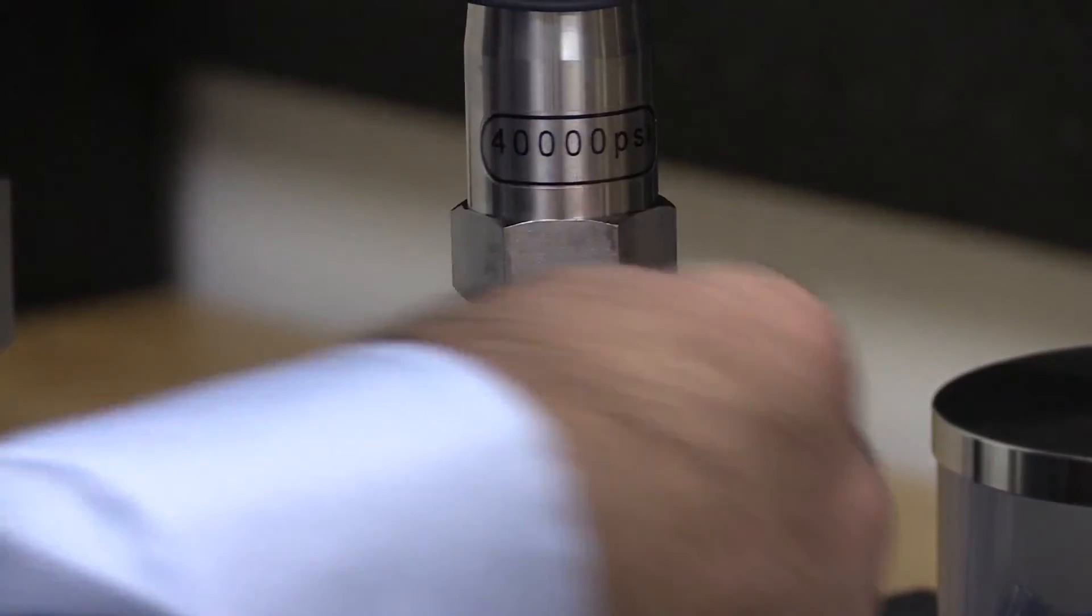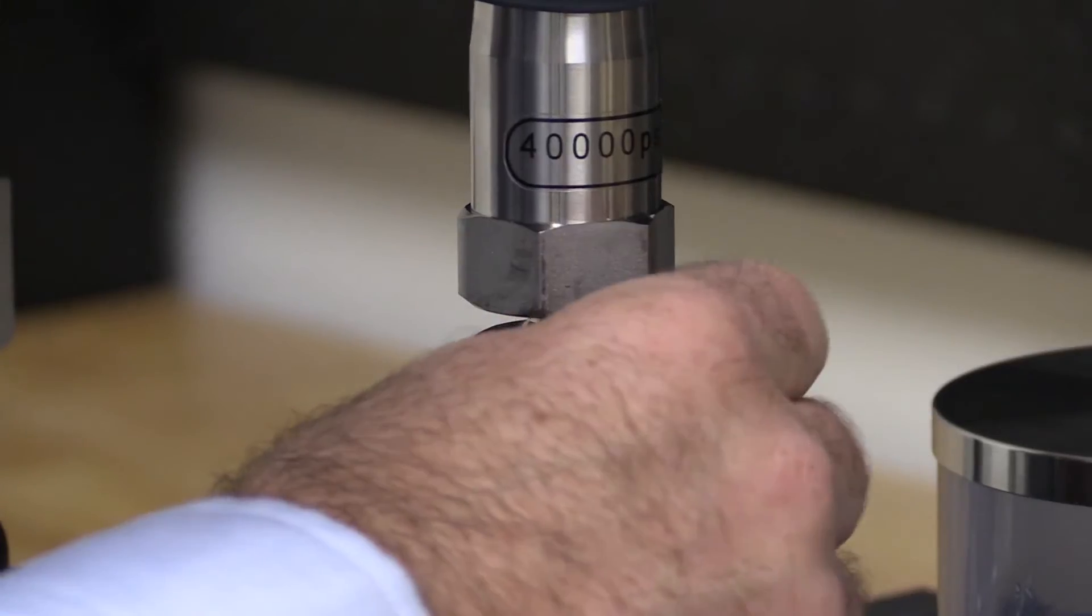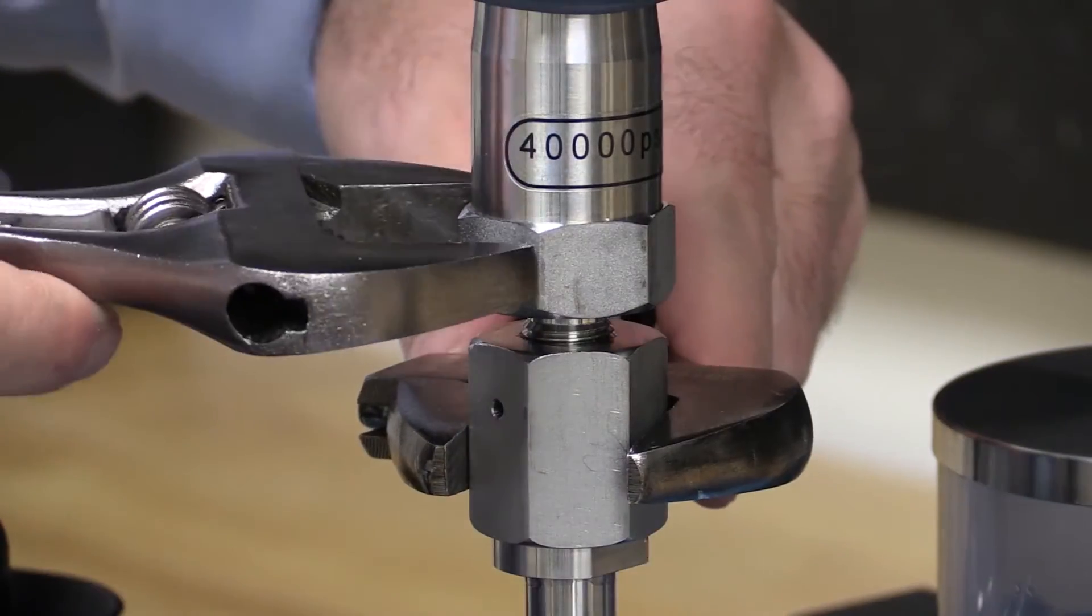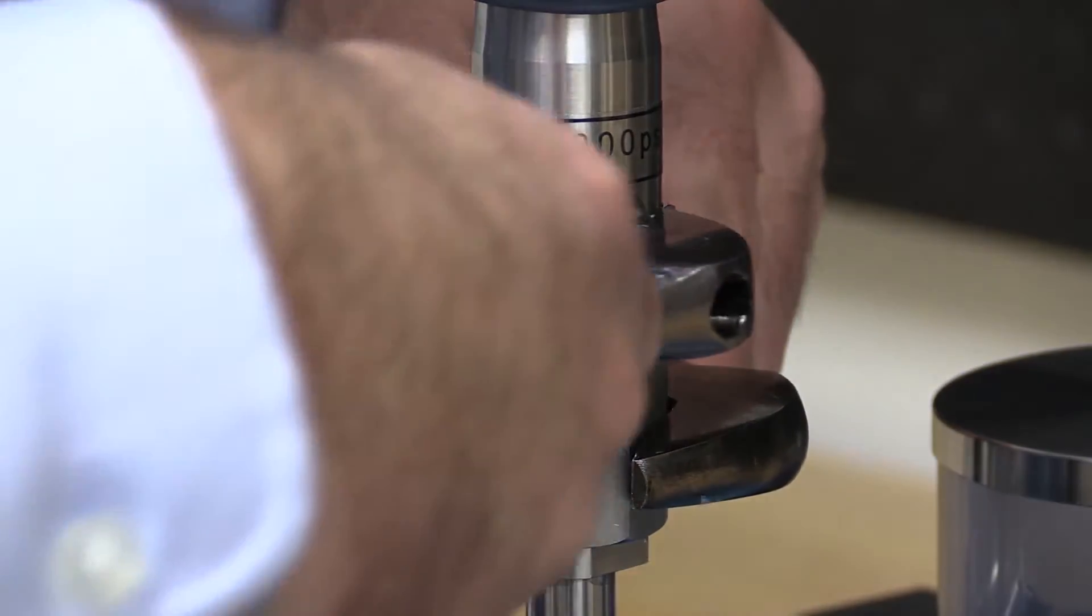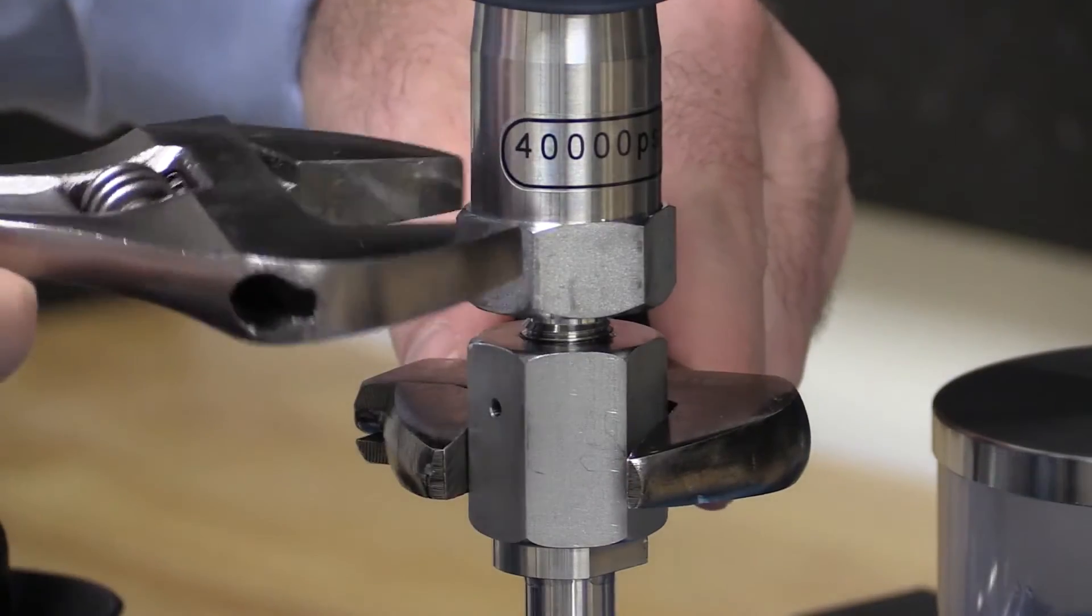The first step is to securely connect the reference to the pump. The device under test, or DUT, could also be connected, but only if it is okay for the DUT to have a vacuum pulled on it.